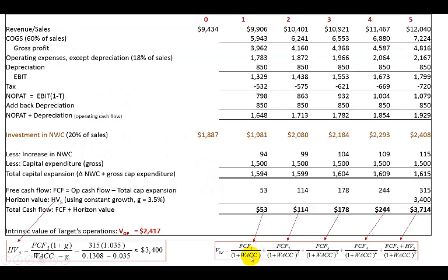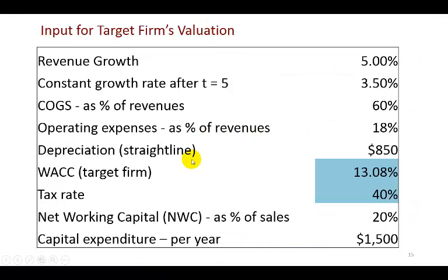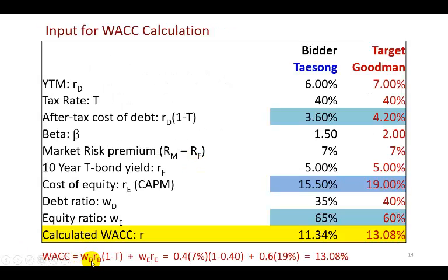The corporate valuation approach relies on the assumption that WACC is the same from year to year — in this example, 13.08%. But if the acquisition is financed with a lot of debt that the acquirer intends to pay off rapidly in the early years, the firm's debt ratio changes from year to year. If the debt weight WD changes from year to year, the weighted average cost of capital would not be constant.